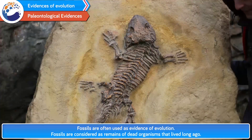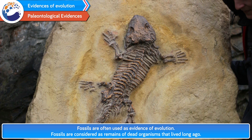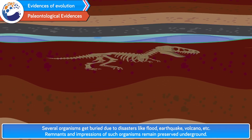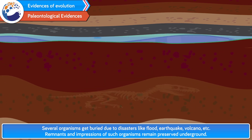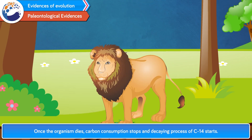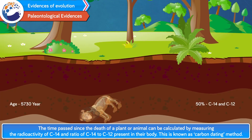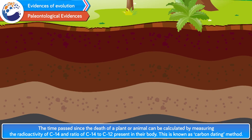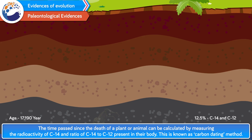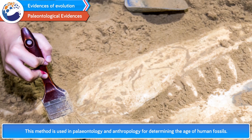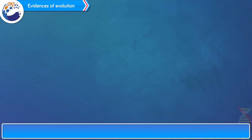Paleontological evidences: Fossils are often used as evidence of evolution. Fossils are considered as remains of dead organisms that lived long ago. Several organisms get buried due to disasters like flood, earthquake, volcano, etc., and remnants and impressions of such organisms remain preserved underground. Once the organism dies, carbon consumption stops and the decaying process of C14 starts. The time passed since the death of a plant or animal can be calculated by measuring the radioactivity of C14 and ratio of C14 to C12 present in their body. This is known as the carbon dating method, used in paleontology and anthropology for determining the age of human fossils.